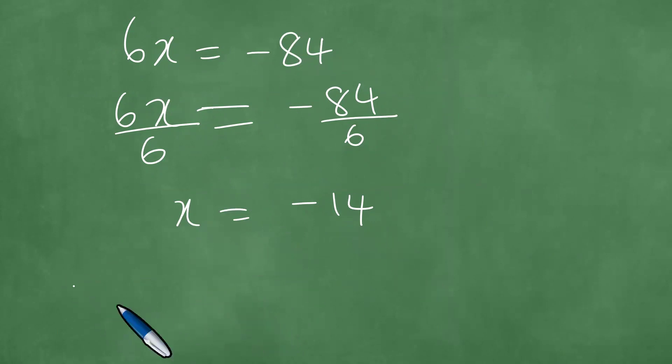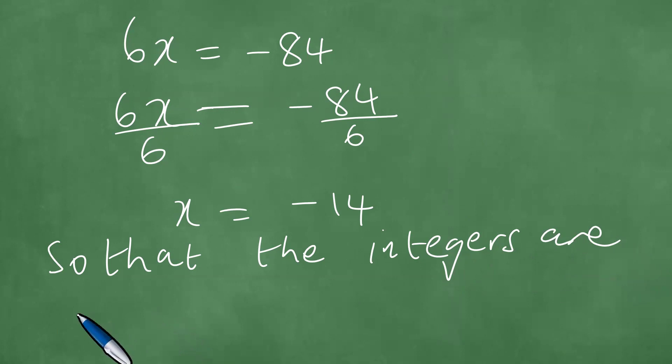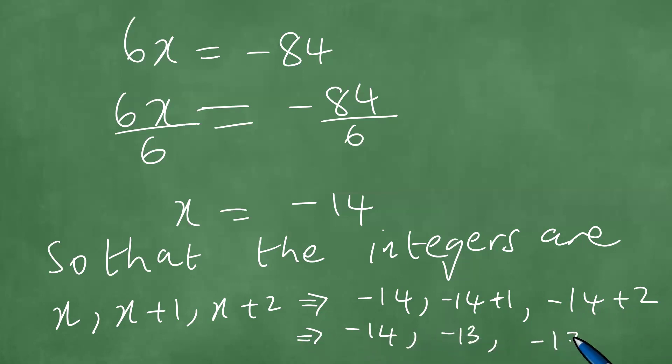So the integers are x, x plus 1, and x plus 2 as consecutive integers. We have minus 14, minus 14 plus 1, and minus 14 plus 2. So this is exactly minus 14, minus 13, and minus 12.